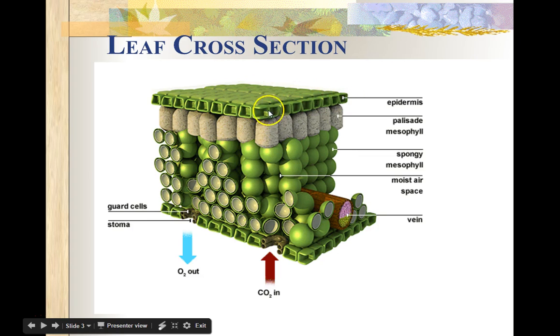And then we have the epidermal cells. So these are upper epidermis cells that provide protection and prevent the leaf from drying out.